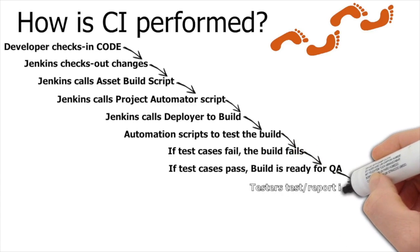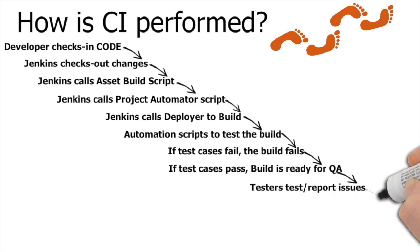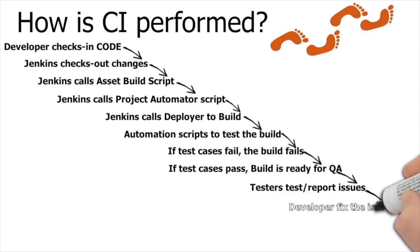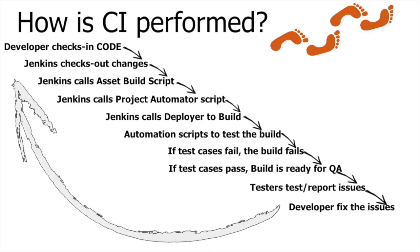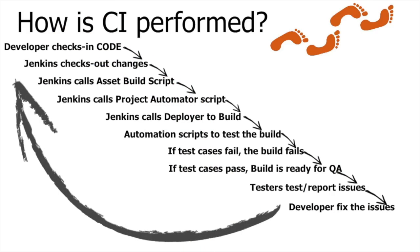If the test cases are failing, the build fails. But if the test cases are passing, the build is ready to test and is forwarded to QA, where folks test it and report any issues to the developer team. The developers fix the issues, make changes, and the whole process repeats — development team, DevOps team, and testing team all equally involved.